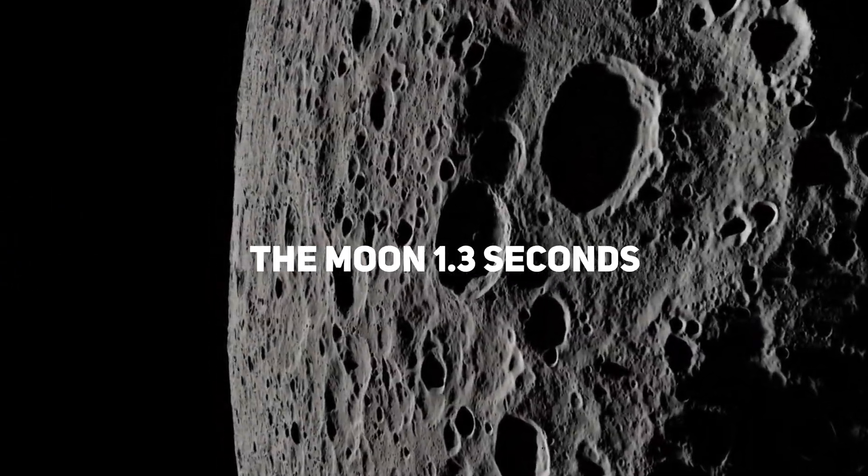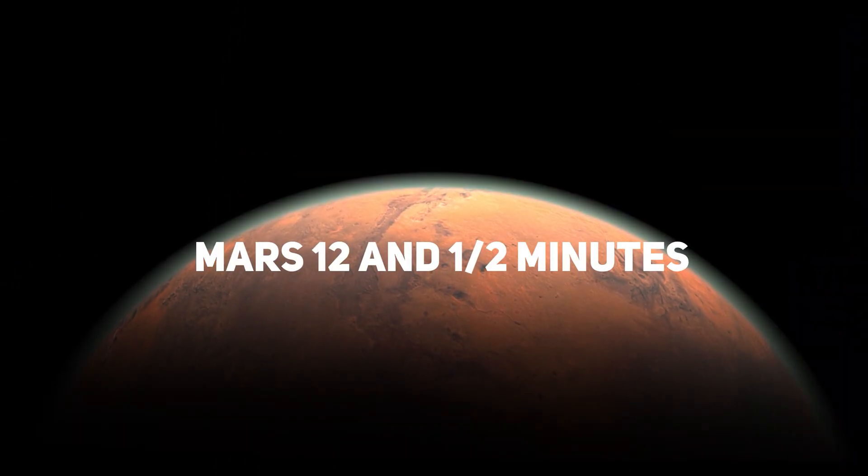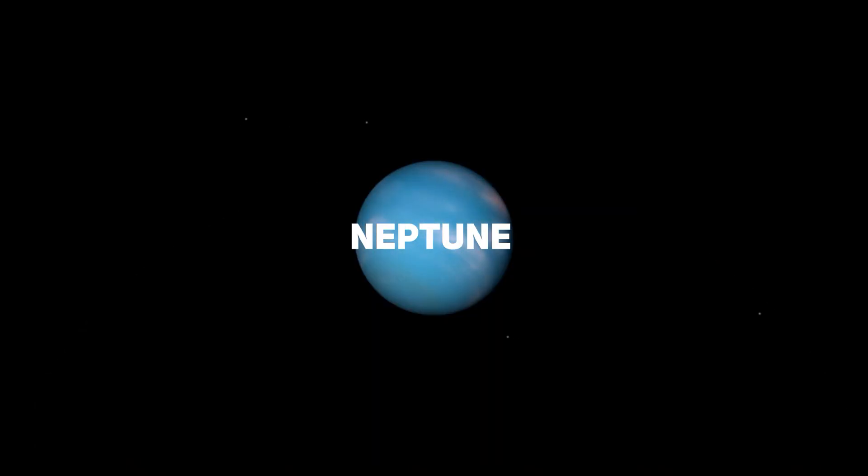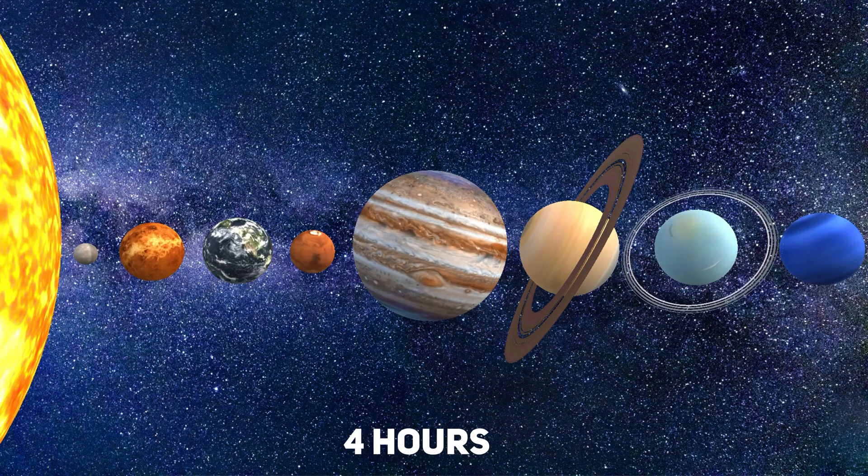The Moon, 1.3 seconds. Mars, 12 and a half minutes. Neptune, the farthest planet in the solar system, takes four hours.